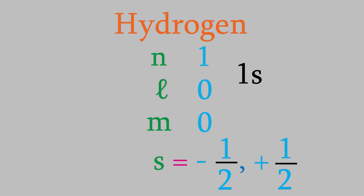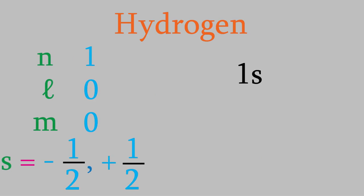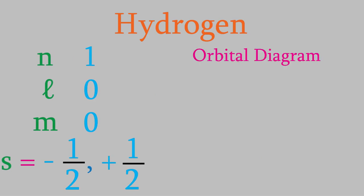It's such important information that chemists have developed two different ways of summarizing it. The first way is called an orbital diagram. In an orbital diagram, we draw boxes for each type of orbital in our atom. In the case of hydrogen, we only have one orbital, the 1s orbital, so we only draw one box and label it 1s. In each box, we draw each electron using an arrow — we draw up arrows for spin positive one-half and down arrows for spin negative one-half. Since we don't know whether hydrogen's spin is positive or negative, we could draw the arrow in either direction — I'll draw an up arrow.